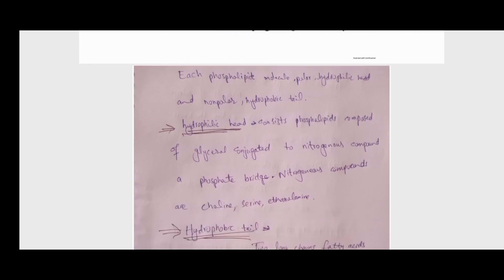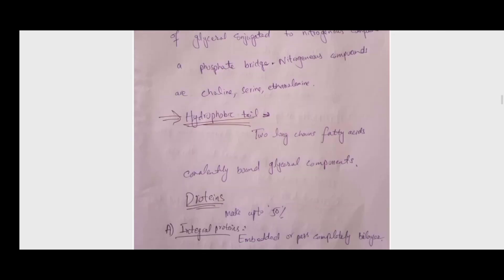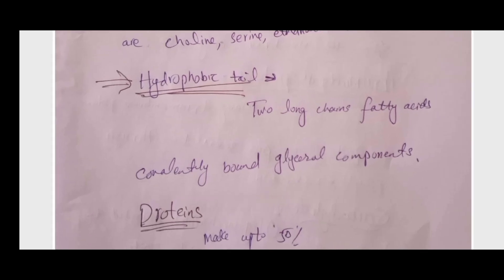Each phospholipid molecule has two parts: a hydrophilic head and a hydrophobic tail. The hydrophilic head is polar and consists of a phosphate group composed of glycerol conjugated with nitrogenous compounds. These compounds may be choline, serine, or ethanolamine.